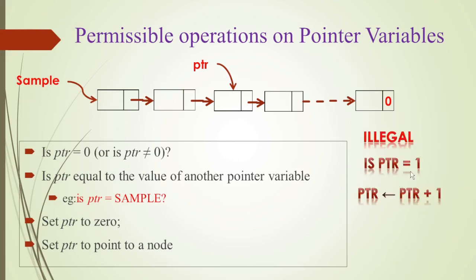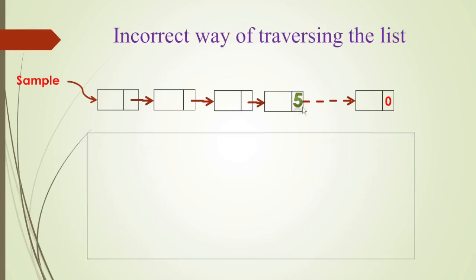Now what are the operations you cannot perform? You cannot check if Ptr is equal to 1 or if Ptr is equal to 5 — that is not allowed. You also cannot do Ptr plus 1 assigned to Ptr. That would imply you can move through nodes by incrementing the pointer, which is not valid for linked list pointers.